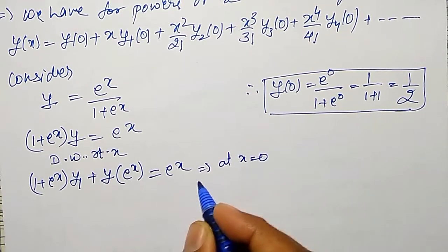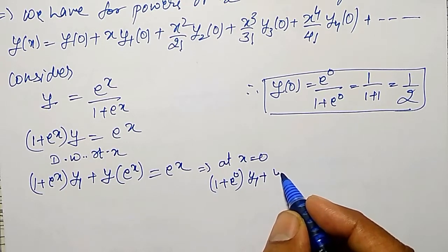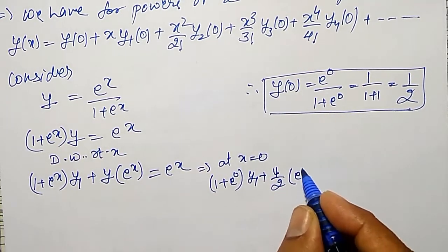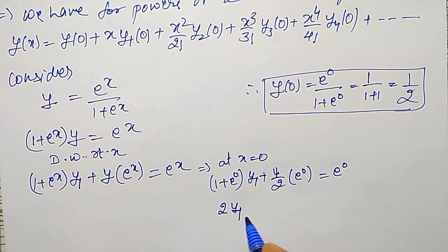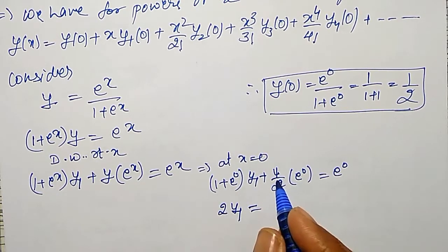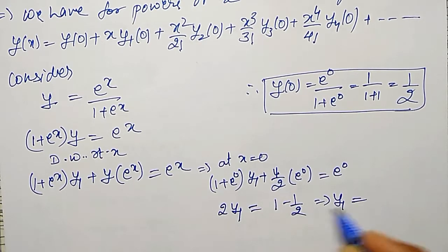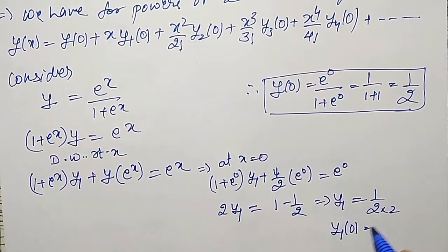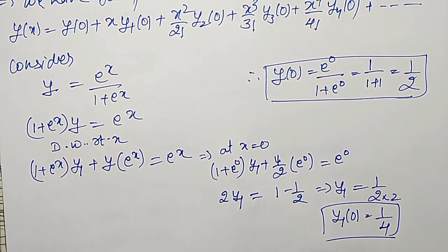At x = 0: (1 + 1)·y₁ + (1/2)·1 = 1, so 2·y₁ + 1/2 = 1, giving 2·y₁ = 1 − 1/2 = 1/2. Therefore y₁(0) = 1/4. This is the second non-vanishing term value.